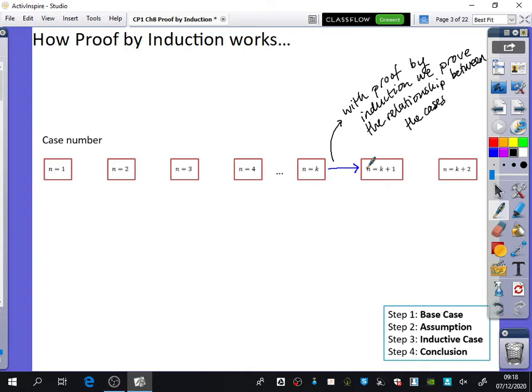Then what we do is we try and prove the first case. If I prove the first case and I've proven that you can go from one case to the next by that inductive logic, which means what proof by induction is, if I've proven this is true and I've proven the relationship is true, then in theory, I have proven that all of them are true because I've proven the relationship and I've proven one of the cases.